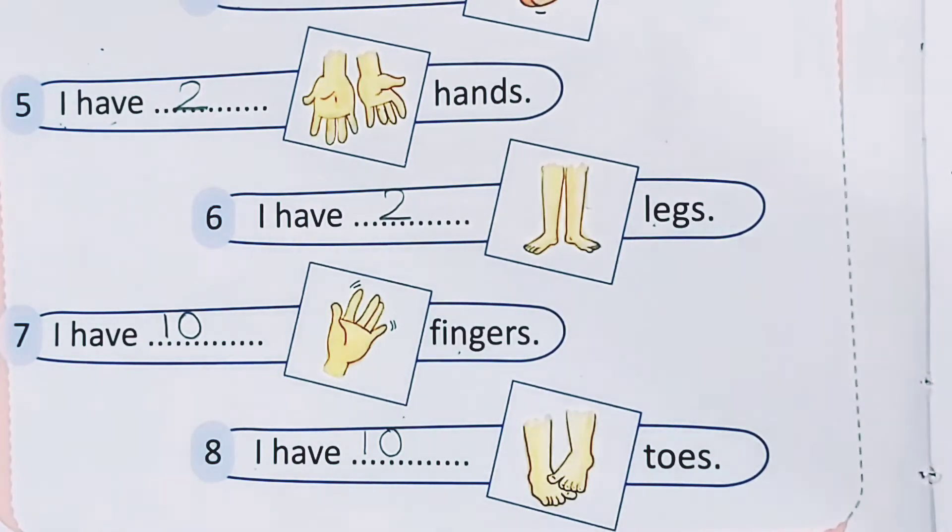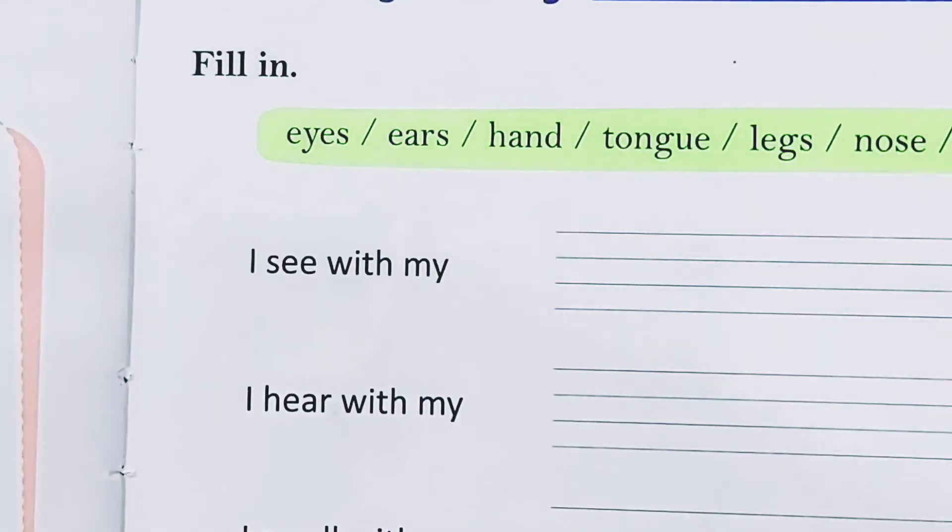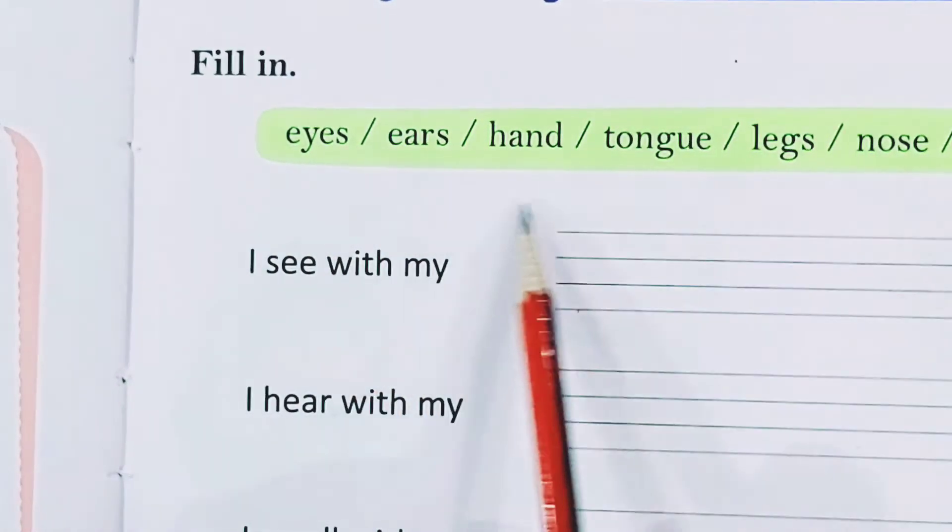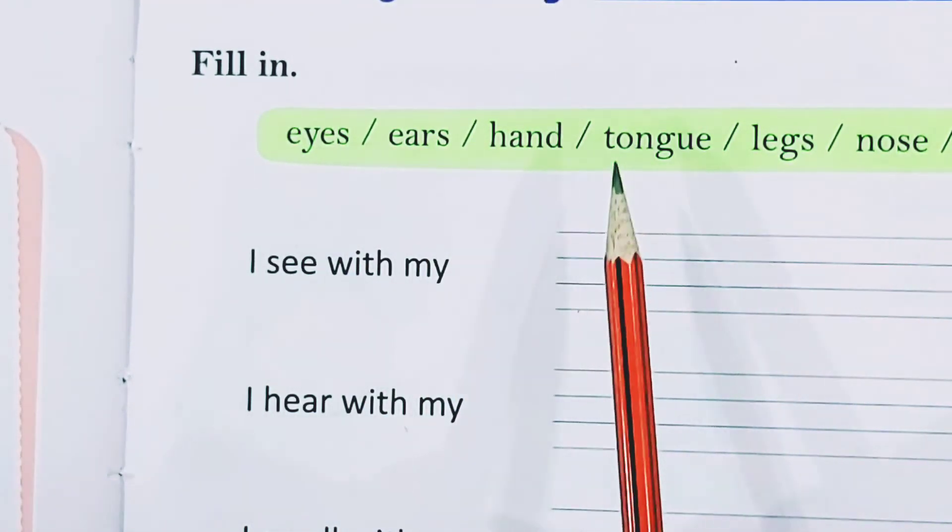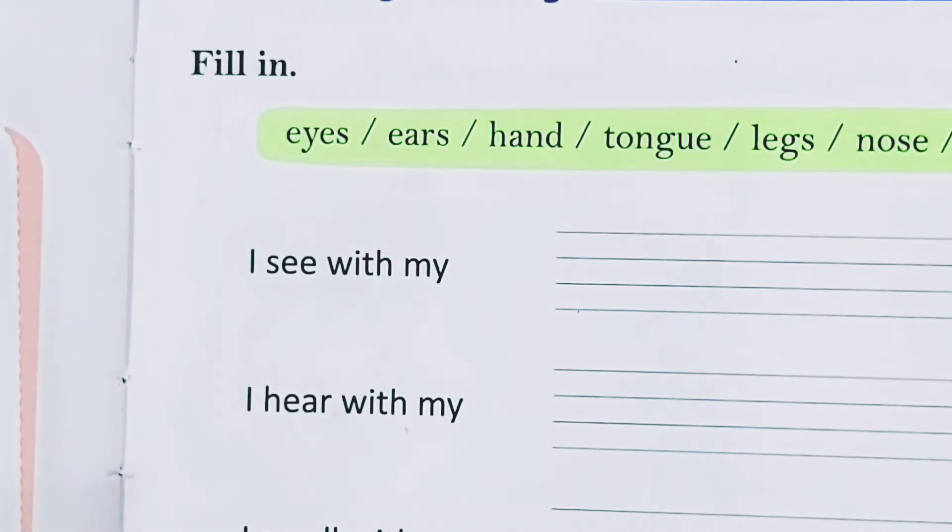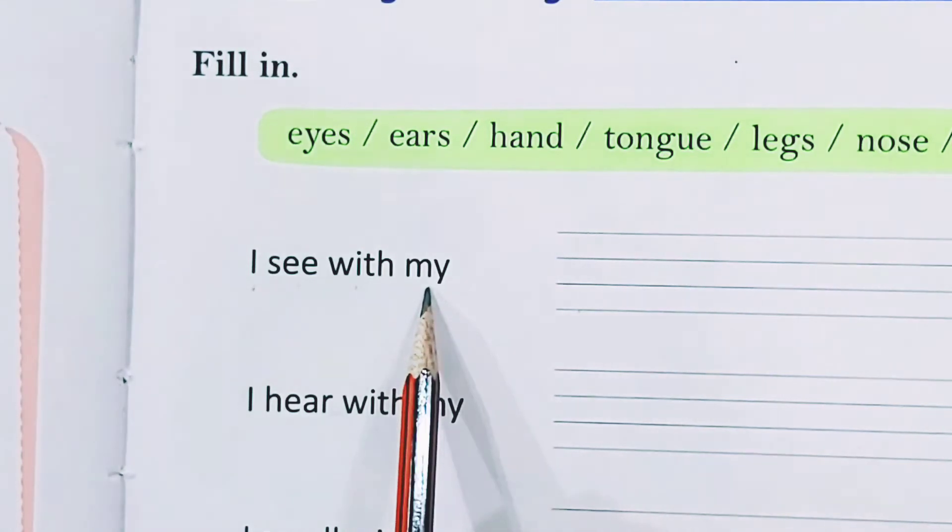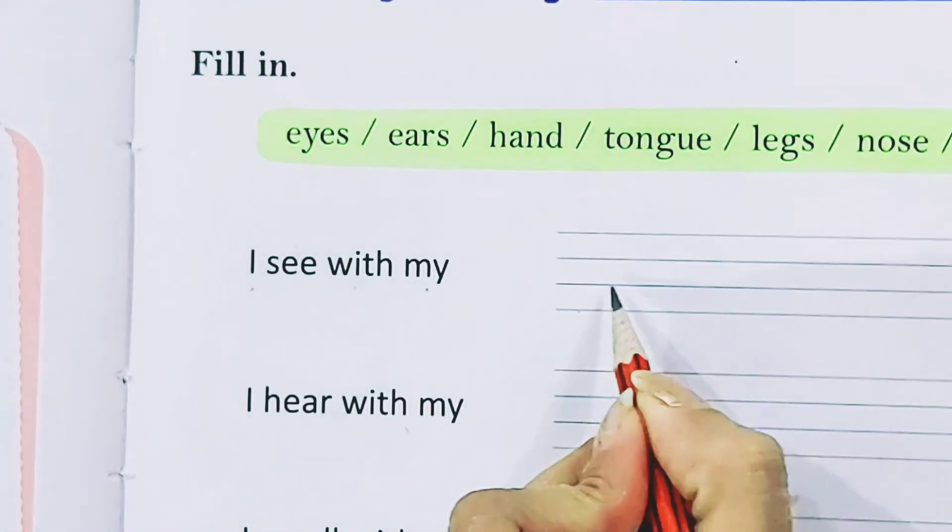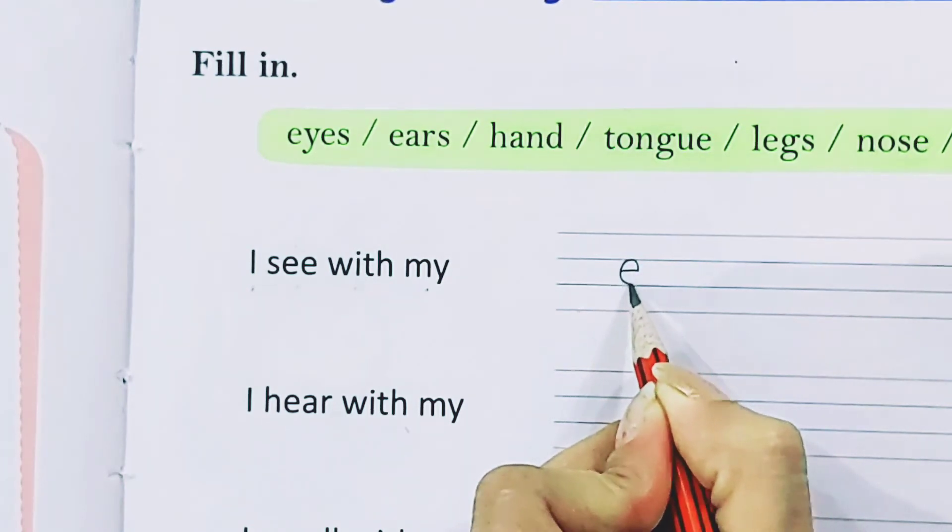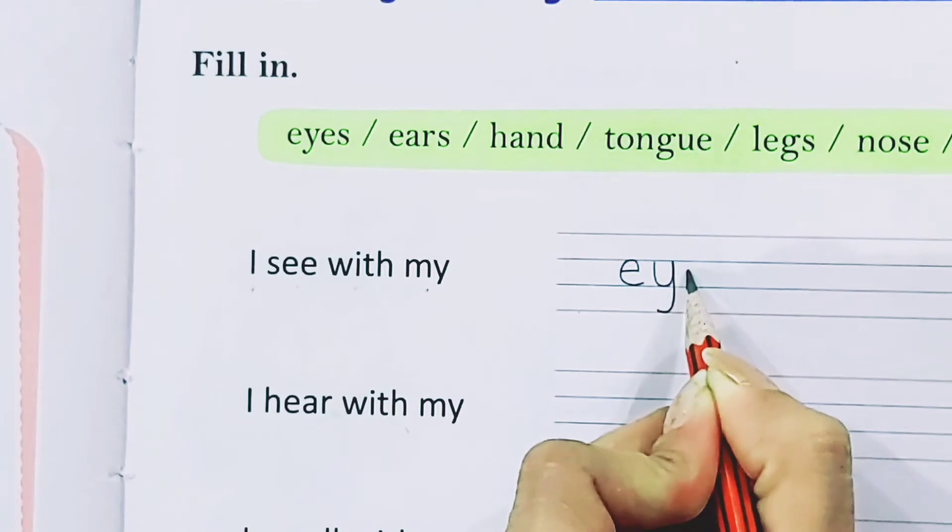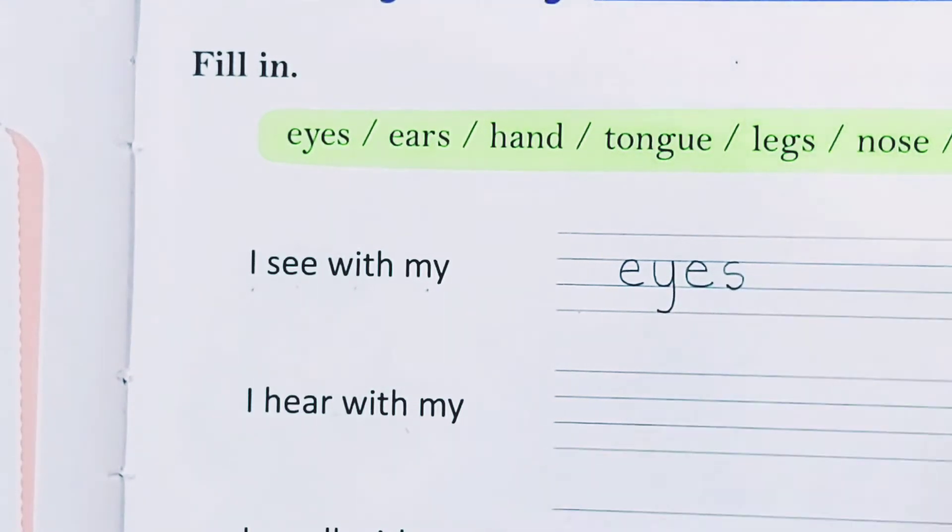Now, children, come to the next page. On this page, children, can you see this green box? We will complete these sentences by using these words. So, are you ready, children? Now, the first sentence is, I see with my eyes. So, we will write, E-Y-E-S. Eyes.